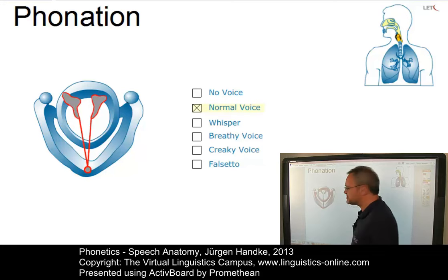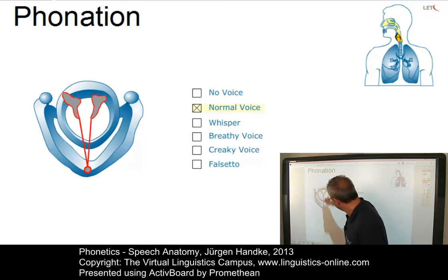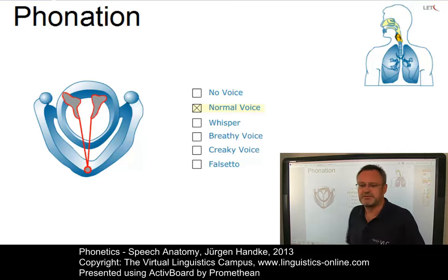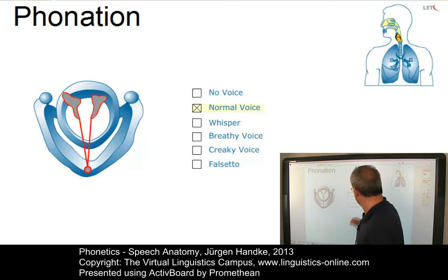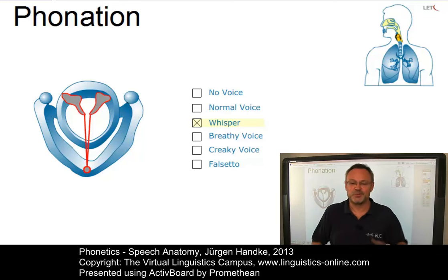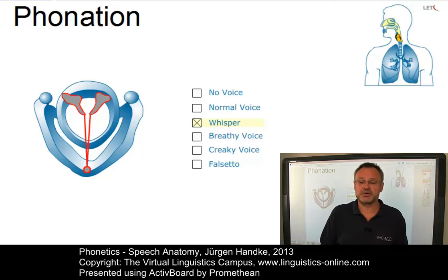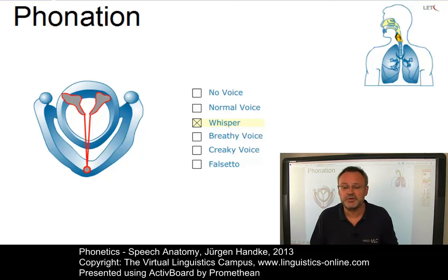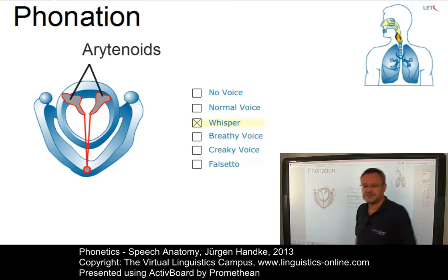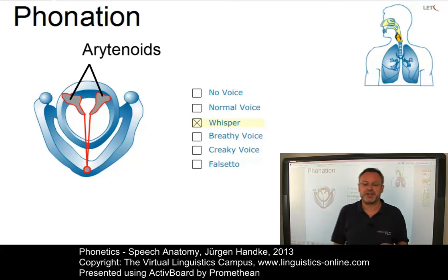Normal voice, or just voice, refers to normal vocal chord vibration occurring along most of the length of the glottis — so the vocal chords vibrate. Whisper requires a far greater constriction than the voiceless setting of the glottis, and is generally achieved by adducting the vocal chords while maintaining an opening between the arytenoids, the cartilages to which the vocal folds are attached.